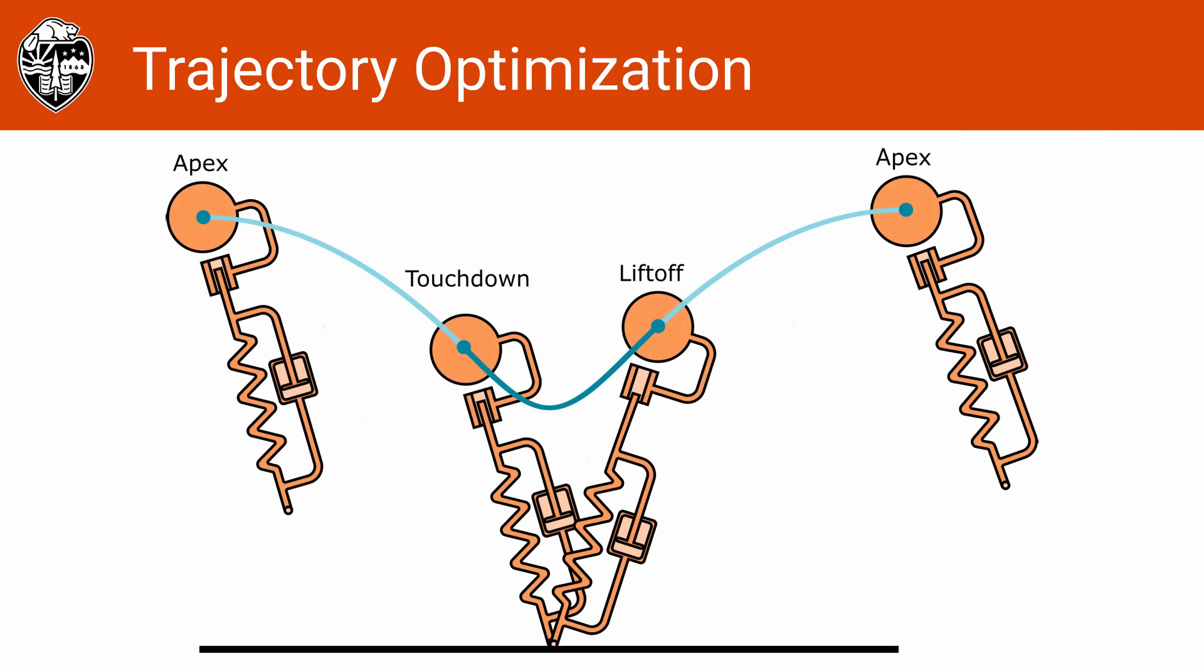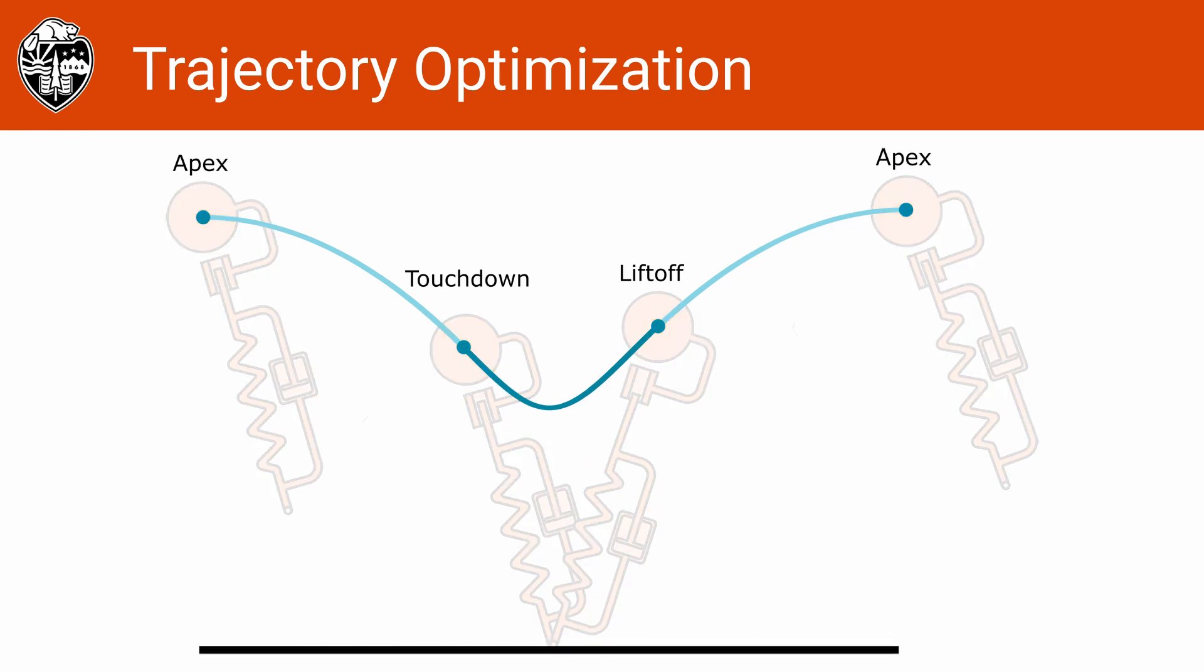We use direct collocation trajectory optimization to find the motion and control inputs. First, we start at an apex state, which is where the body has zero vertical velocity, go through a touchdown hybrid transition, progress through stance until it lifts off the ground, and then ascend back to apex. In direct collocation, we then discretize the states and control actions throughout each of the hybrid phases. A coarse discretization is shown here in pink. Then, to ensure the dynamics are satisfied, we apply a constraint between adjacent states to enforce a one-step numeric integration. In this work, we use trapezoidal collocation.